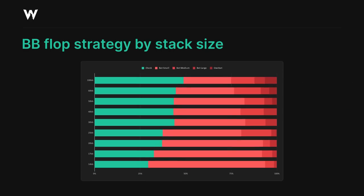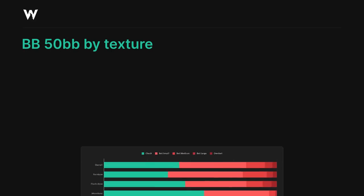As you can see, the trend of being more aggressive at shallower stacks is still present in a fairly linear way. The most surprising part of the equation here is that we're still forced to check almost half the time at deeper stacks. Even though we possess a significant positional advantage, the small blind's range is protected enough that we have to be somewhat cautious on many flops.